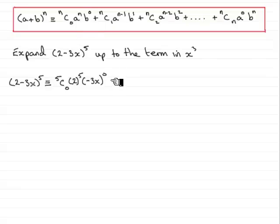Then, moving on to the next term, we would have 5c1. And then, 2 to the power of 4. We reduce the power. And then, we increase the power on the b term. So, that becomes minus 3x to the power of 1.